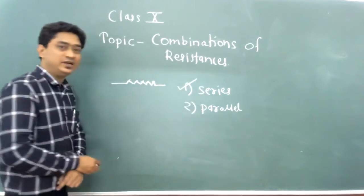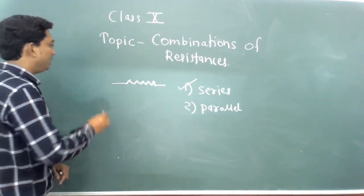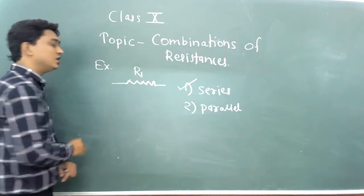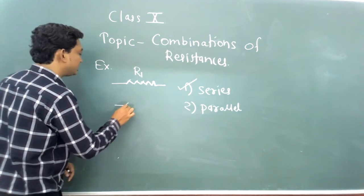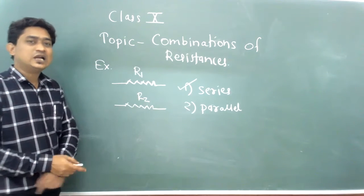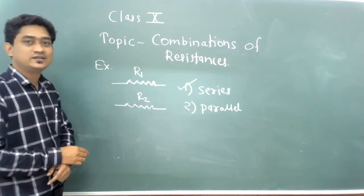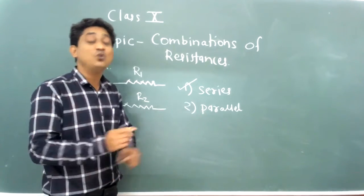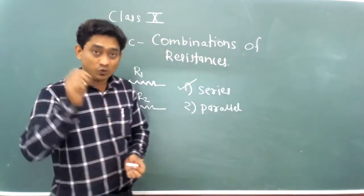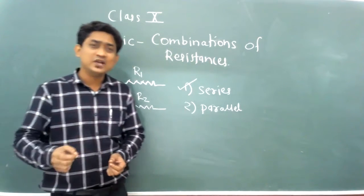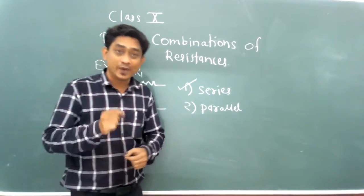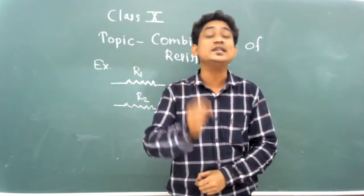The first type is series combination. For example, take two resistances — this is the first resistance R1 and this is the second resistance R2. Now we have to combine these two resistances in a series combination. What is the definition of series combination? Whenever two or more resistances are connected in an end-to-end manner, such a type of combination is called a series combination.